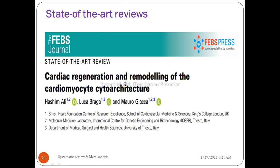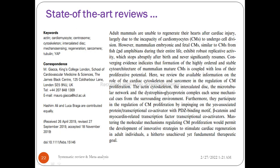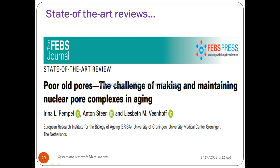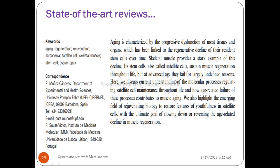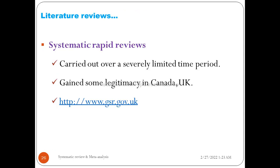An example of a state-of-the-art review is 'Cardiac regeneration and remodeling of the cardiomyocyte architecture.' Another example is 'The changing of making and maintaining nuclear pore complexes in aging.' A third is 'Understanding messenger regenerative decline with aging: new approaches to bring back usefulness to aged stem cells.' The third type is the systematic rapid review - a review carried out over a severely limited time period.